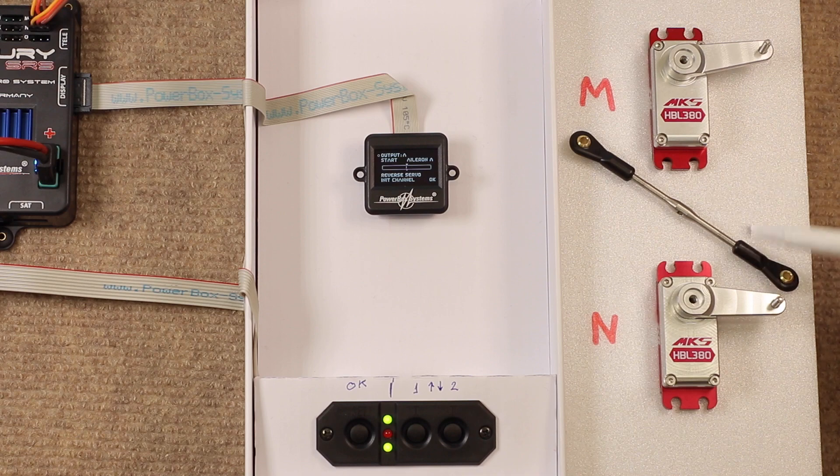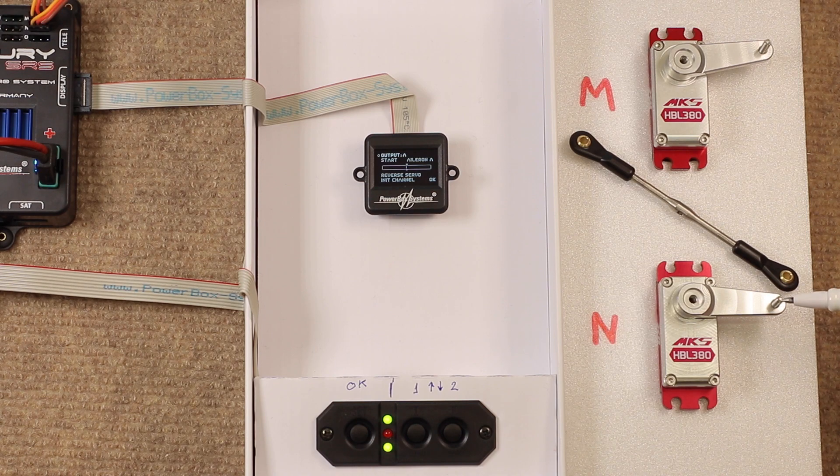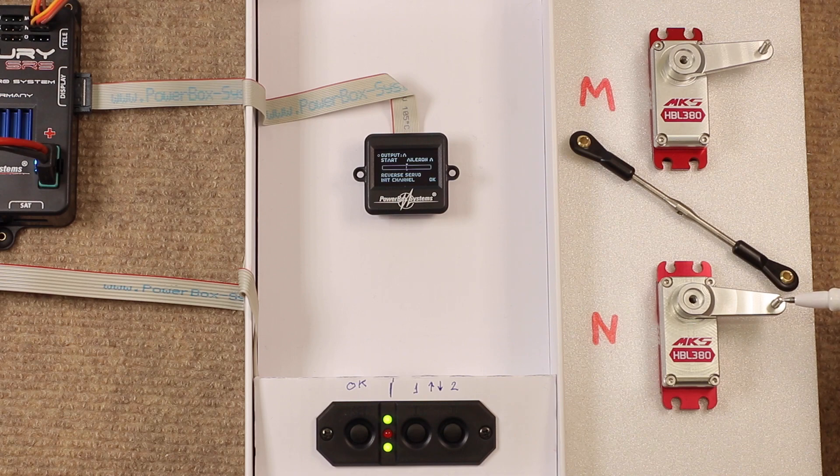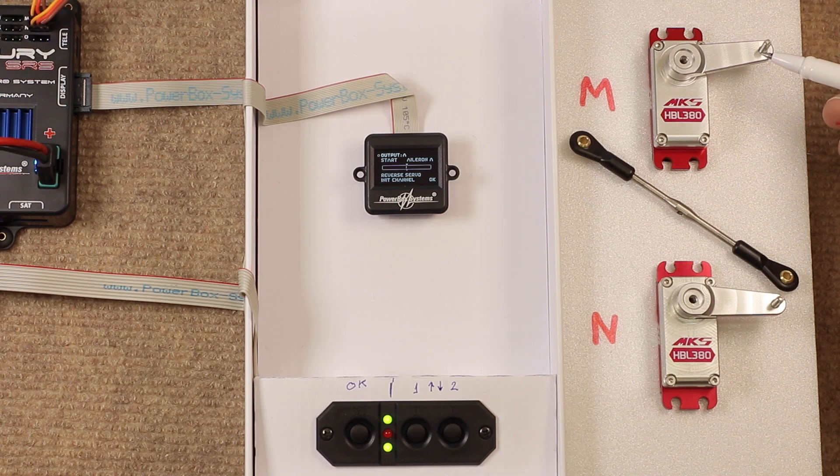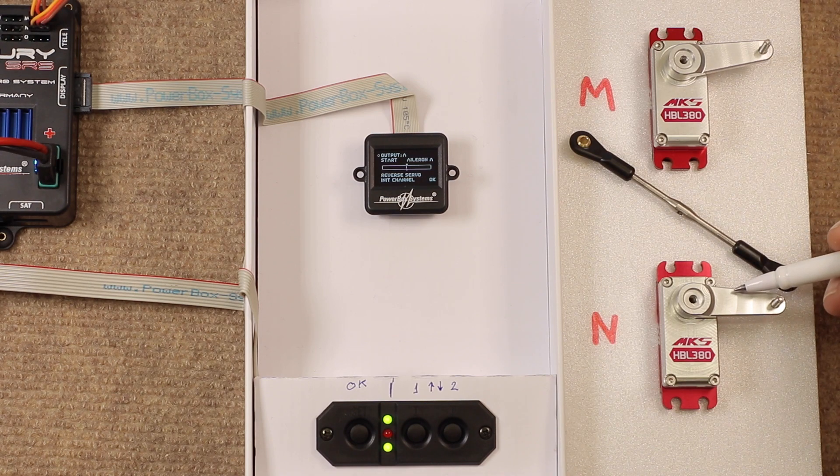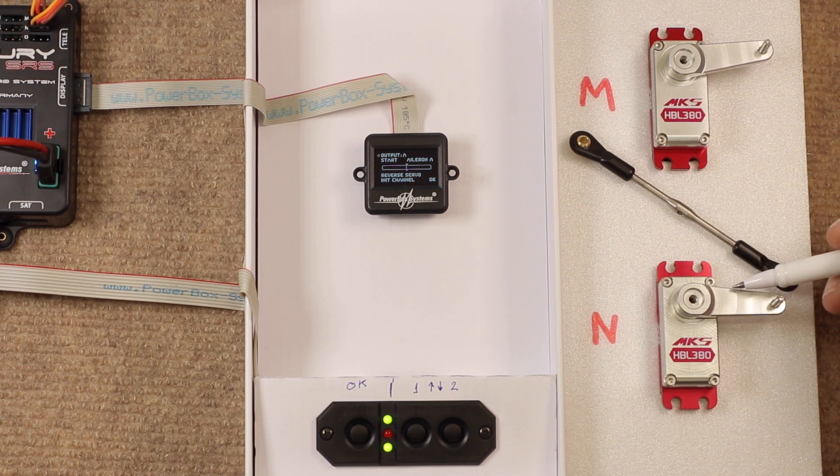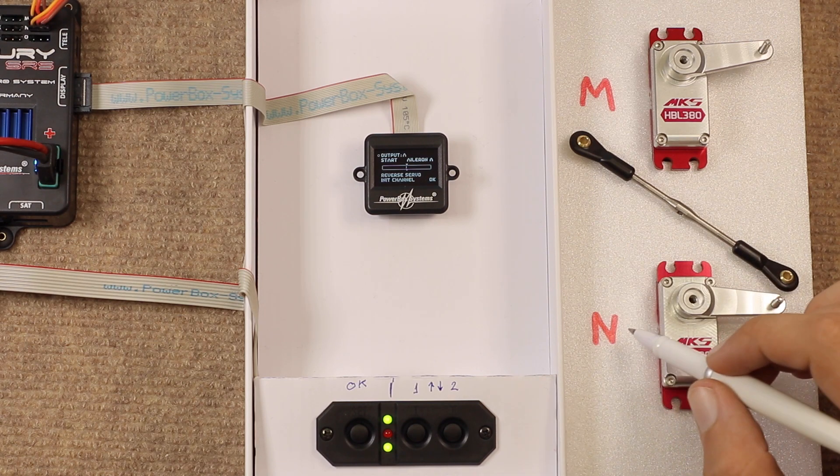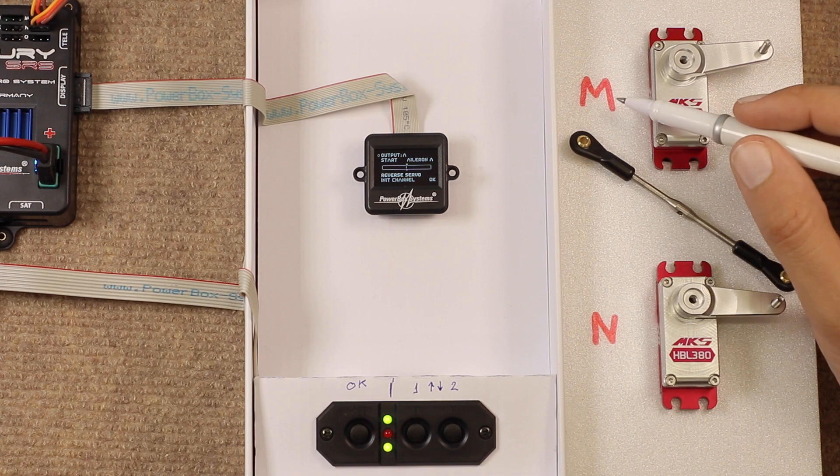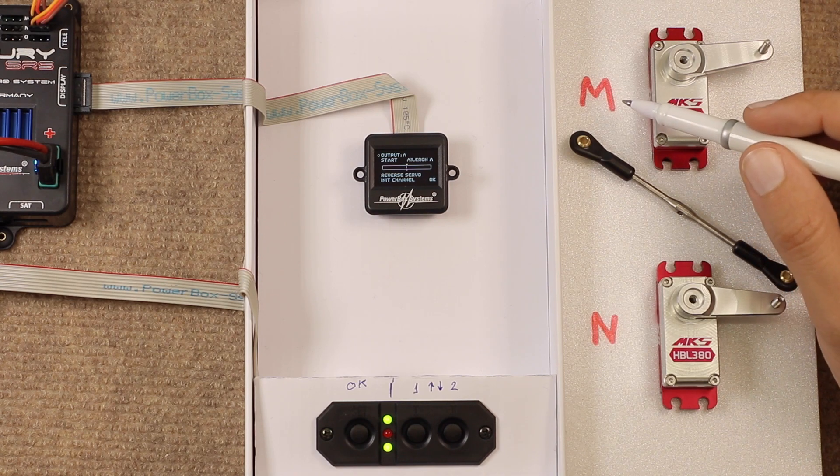Now, the way I normally set these servos, one servo I'll use as if it was the master servo, which is the one that I will program via the transmitter. I will adjust any sub-trim, endpoint, and so on, for this servo via the transmitter. And then, this servo, I'm going to do everything I can to match it so that it works exactly the same as this one. So, output N, in that case, we can leave as it is, as stock, as standard. And we need to go to output M, so we can set it up.